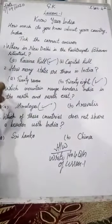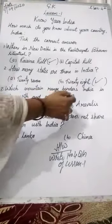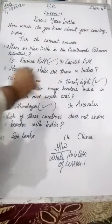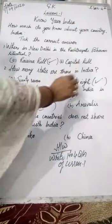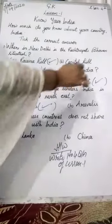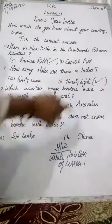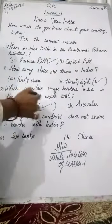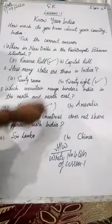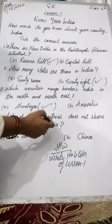Third question: which mountain range borders India in the north and northeast? The answer is the Himalaya mountain range, which is situated in the north of India.